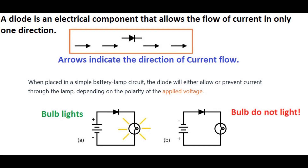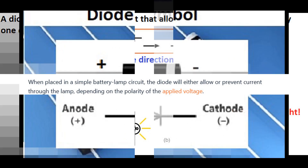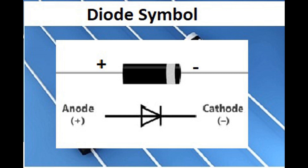When a diode is placed in a battery lamp circuit, the diode will either allow or stop the current from flowing through the lamp. For example, in circuit A, the bulb lights. In circuit B, the bulb does not light because the circuit is reverse biased.